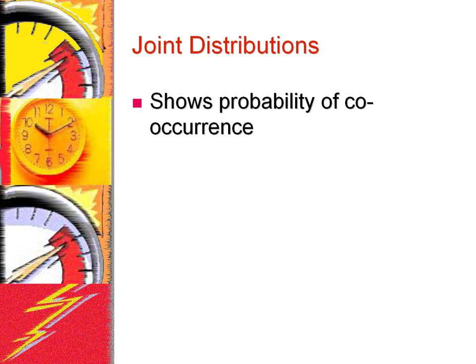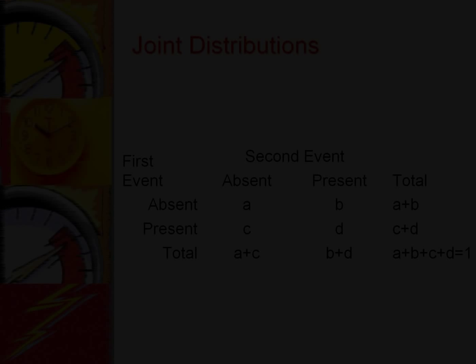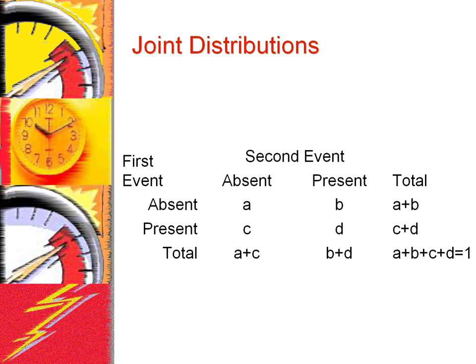A joint distribution shows the probability of two events co-occurring. In complex risk analysis containing several hundred events, the entire analysis is built on the joint distribution of pairs of related events. Typically, one event is the cause and the other is the effect, and the purpose of specifying a joint distribution is to clarify the strength of the causal relationship.